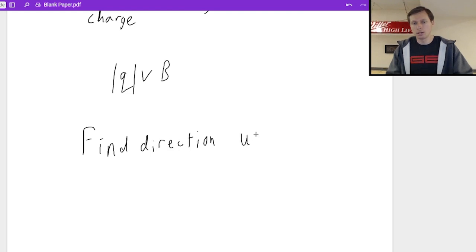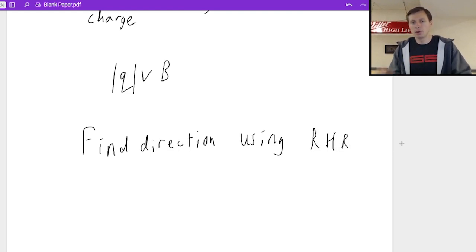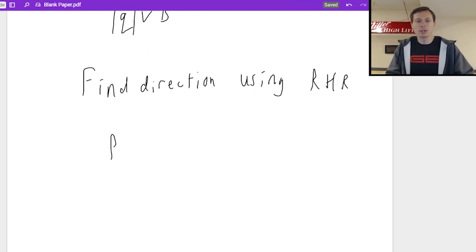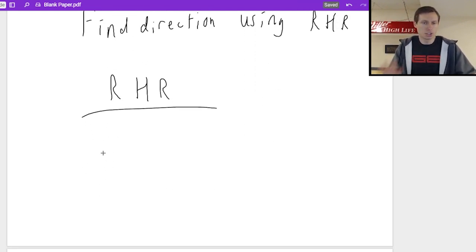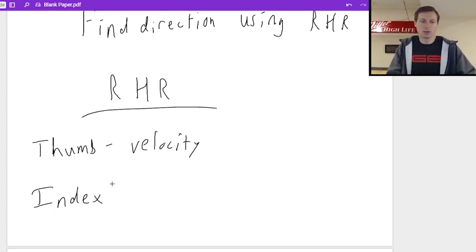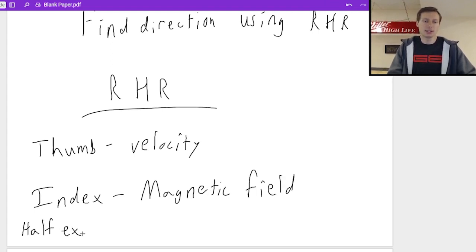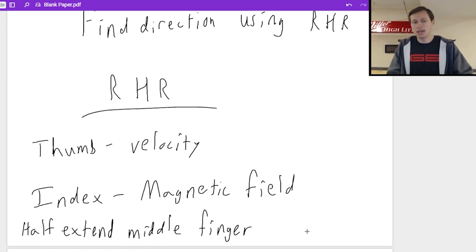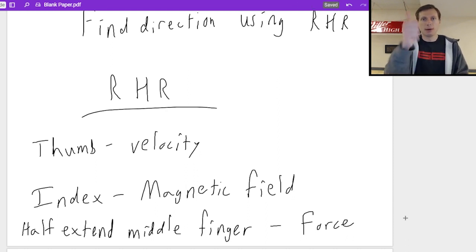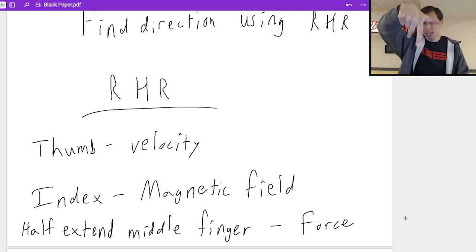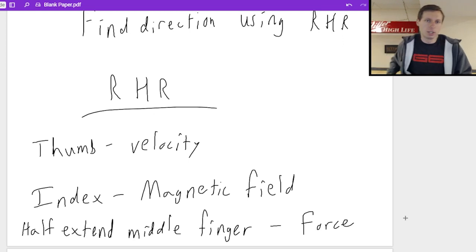So let's make a note of that. Find direction using right hand rule, I'm abbreviating it RHR. And if you forget how to use right hand rule, just a quick refresher, your thumb is going to point in the direction of your velocity, your index finger is going to point in the direction of your magnetic field. And then you half extend your middle finger, only halfway, and that's going to be the direction of our magnetic force. And it's going to look like this, for instance. Thumb up, index finger that way, half extend middle finger that way. And you can obviously reposition this in any orientation you want, depending on what charges you have in this problem.